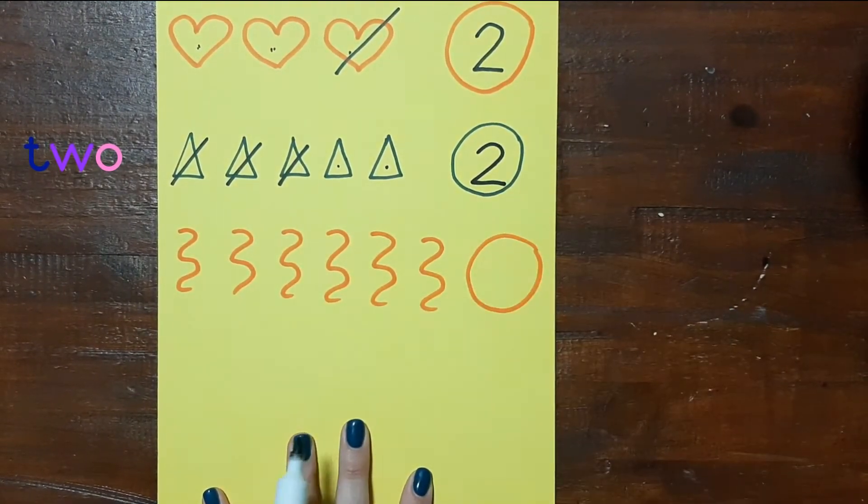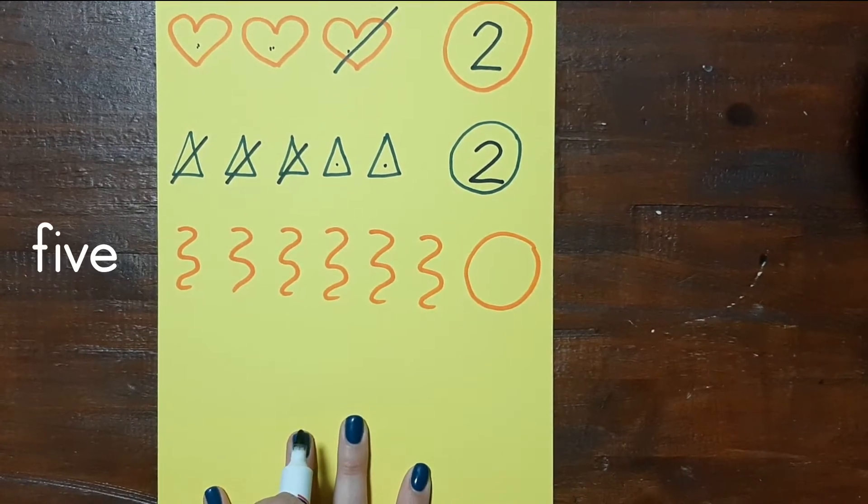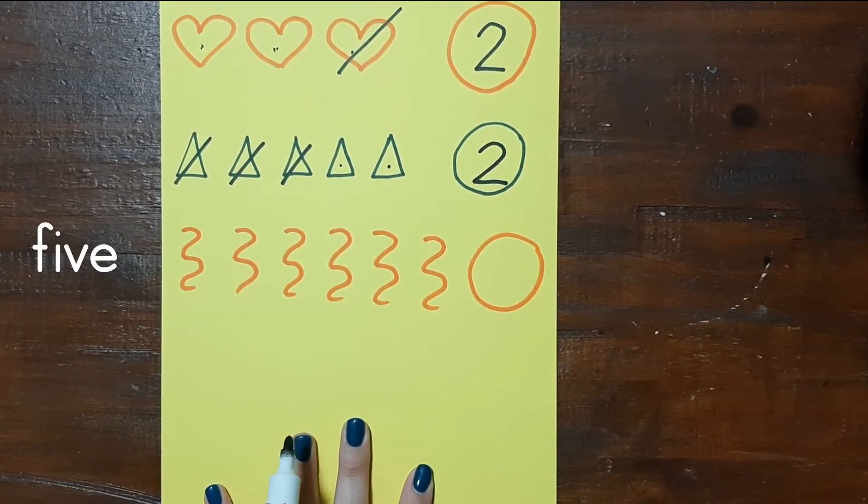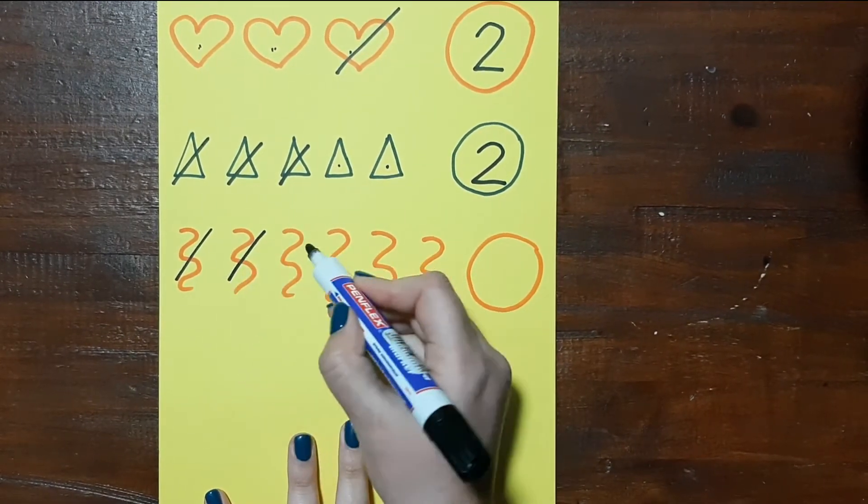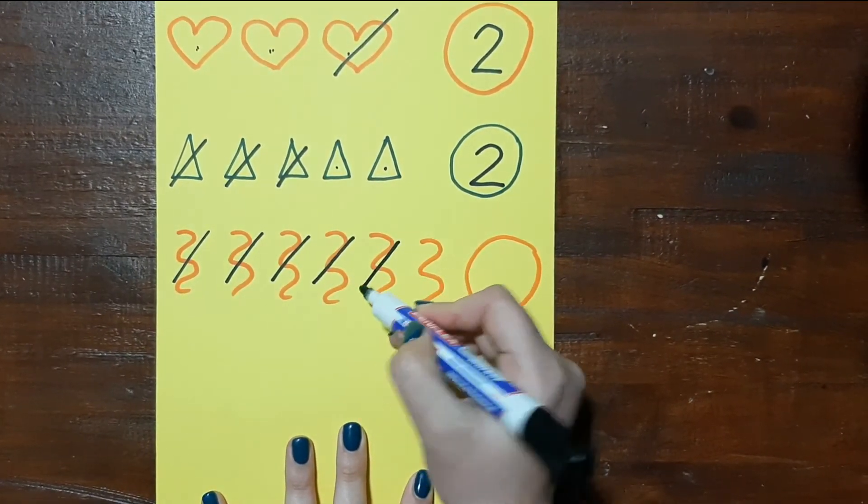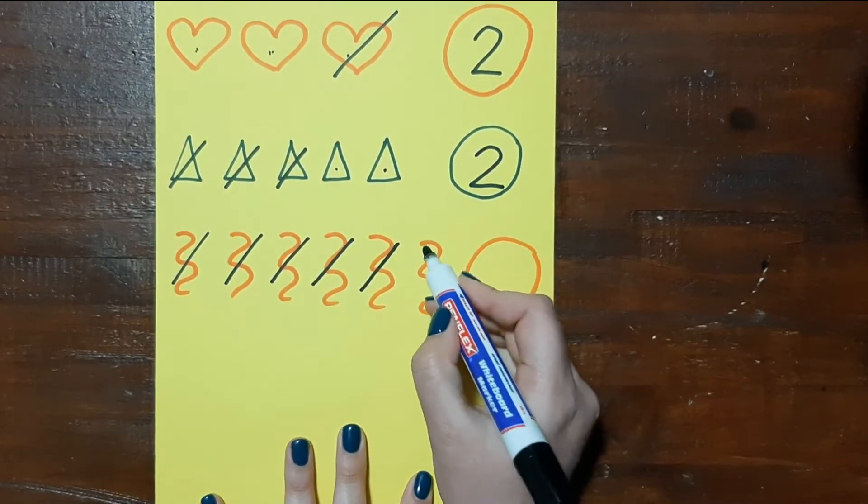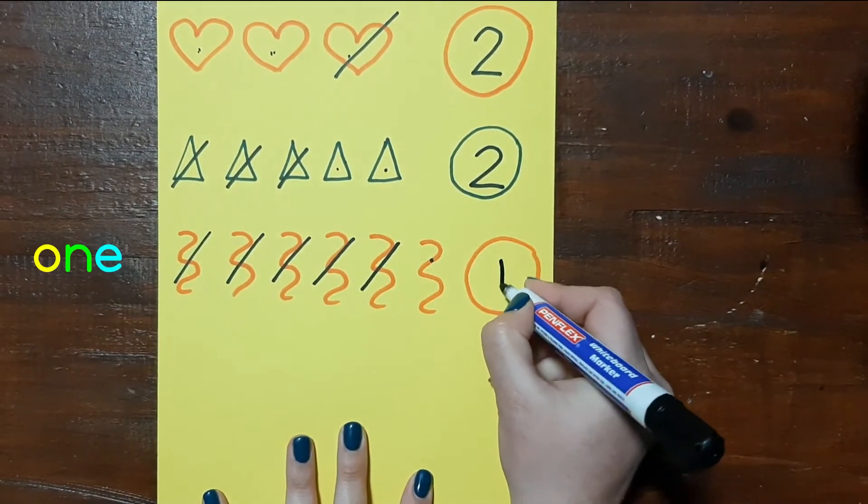And now my teacher says take away 5 squiggles and write the answer in the circle: 1, 2, 3, 4, 5. And how many do I have left? 1 squiggle.